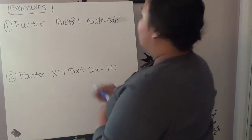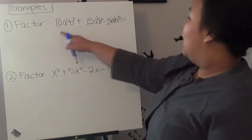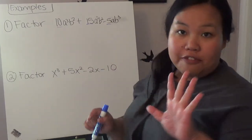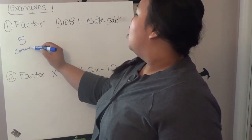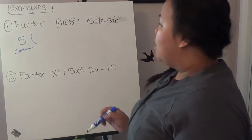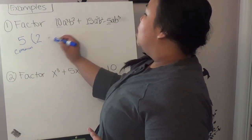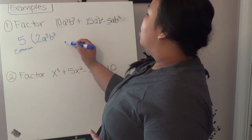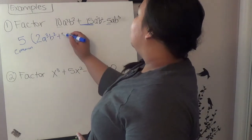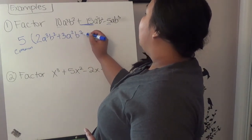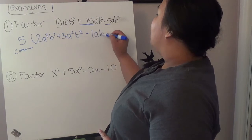Let's look at the numbers. What do 10, 15, and negative 5 have in common? They have 5 in common, so I'm going to take out 5. If I divide 10 by 5, I get 2, and I have a cubed b squared left. Positive 15 divided by 5 gives me 3, so positive 3a squared b squared. And taking out positive 5 from the last term gives me negative 1ab cubed.